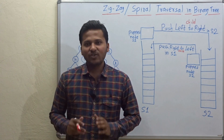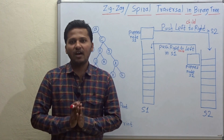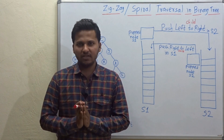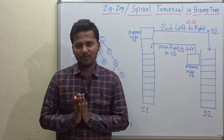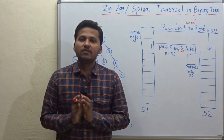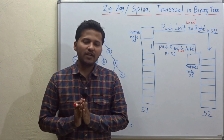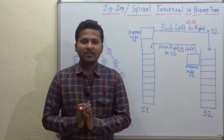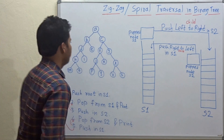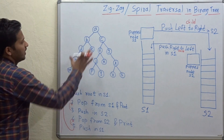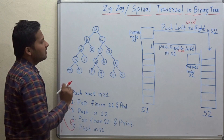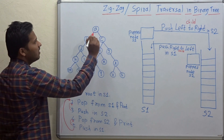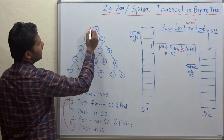Hello friends. Today we are going to see how to traverse a binary tree in spiral level order traversal. This is also called as zigzag level order traversal. This is the binary tree and now I will draw the spiral level order traversal.